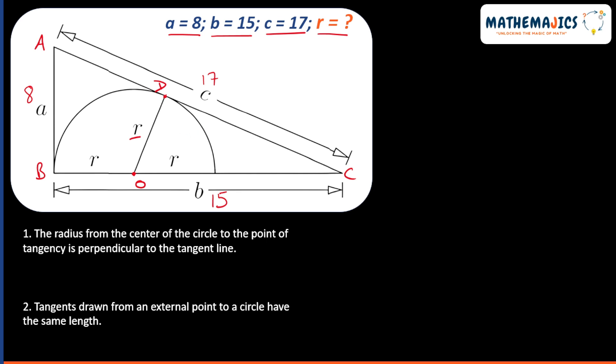We will be using two properties of circles here. The radius from the center of the circle to the point of tangency is perpendicular to the tangent line. That means at the meeting point of radius and tangent, they are perpendicular to each other.